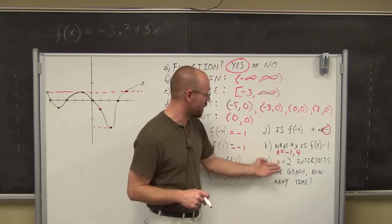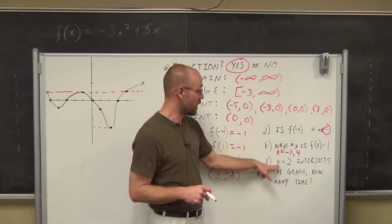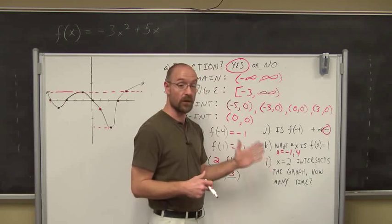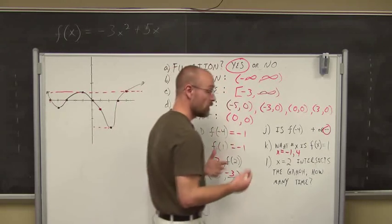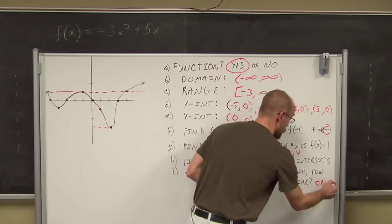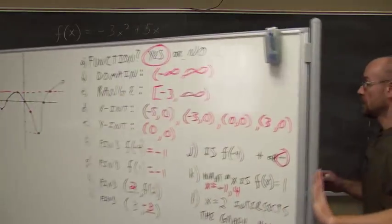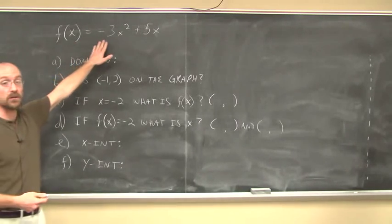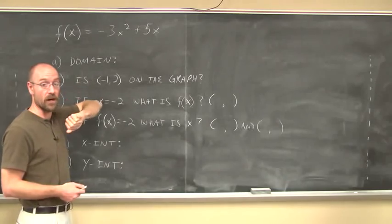The question asks: how many times does x equals 2 intersect the graph? x equals 2 is a vertical line. We know vertical lines only intersect functions one time, and we've already determined this is a function. So intuitively, it should only intersect one time. Now, what if we're not given a graph but given a function? If it's written in function notation, it has to be a function — we can't write it in this notation otherwise.